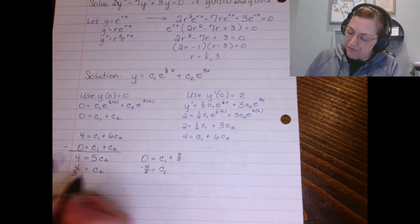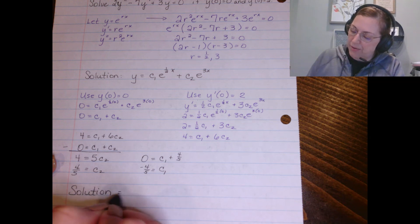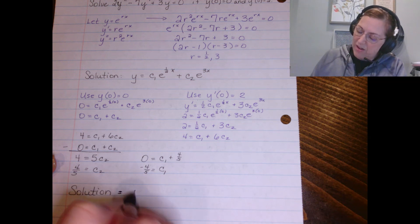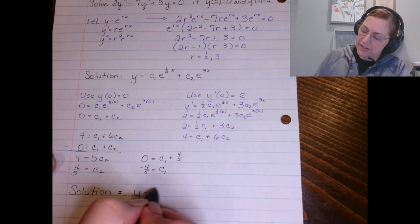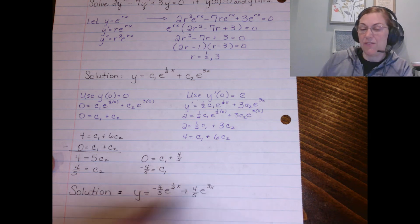So I'm going to take my solution that had these constants, these coefficients, and I'm going to substitute those values in there. I've got y equals c₁ is negative 4/5 e^(1/2 x) and c₂ is 4/5 e^(3x).